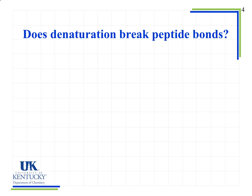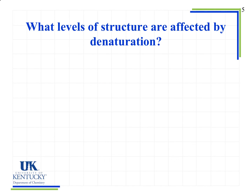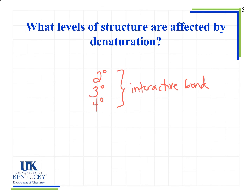So does denaturation break peptide bonds? Hopefully you said no. Remember that peptide bonds are in the primary structure, and when we look at denaturation, we're breaking those interactive forces between different parts of the protein — not breaking actual chemical bonds. The levels of structure affected by denaturation are secondary, tertiary, and quaternary, because these are assembled by interactive forces, not by bonds. Remember that hydrogen bonding is not truly a bond.